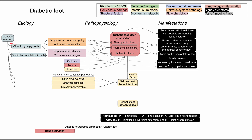It's worth mentioning that diabetes predisposes you to infections to begin with. Diabetes impairs your immune system in a number of ways: it decreases cytokine production, it causes defects in phagocytosis — when your immune system swallows up foreign invaders — and it leads to general immune cell dysfunction. All of this impaired immune function predisposes you to the pathogens that might infect a diabetic foot ulcer.